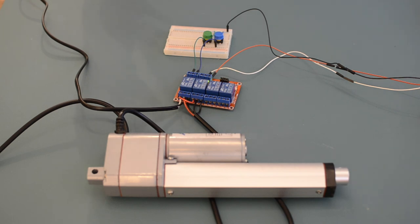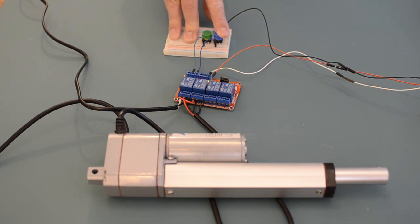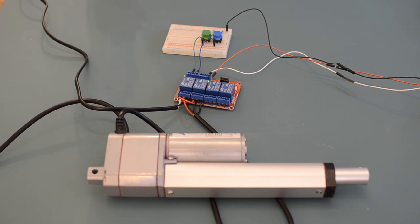This allows me to energize one coil of one of the relays to allow the linear actuator to extend, then de-energize that coil to stop the linear actuator, and then energize the other coil to retract, again de-energizing it to stop it.